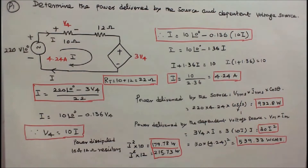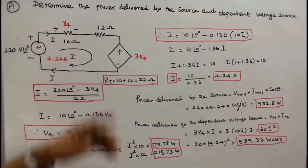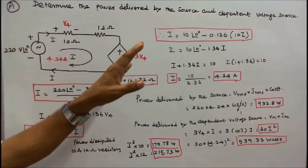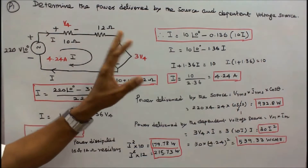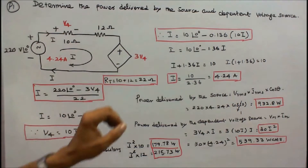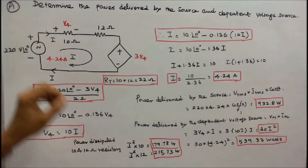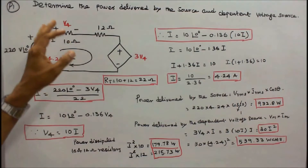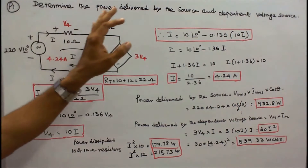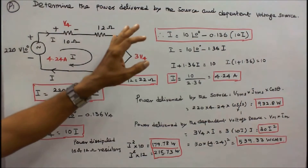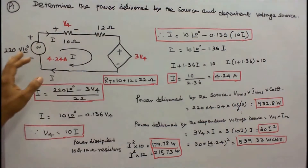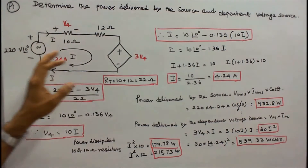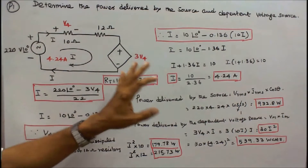In this class we work out 5 problems using Dependent Voltage Source and Dependent Current Source. Problem number 1: determine the power delivered by the source and the dependent voltage source.